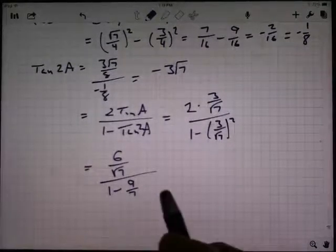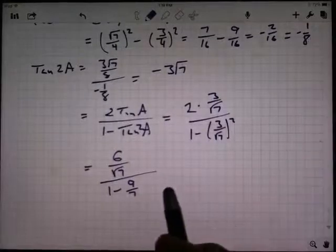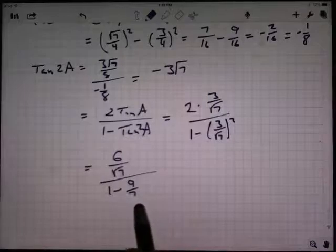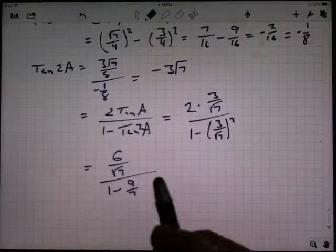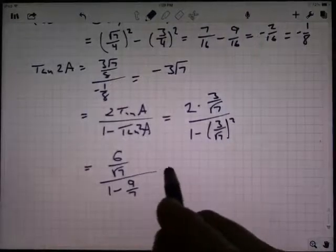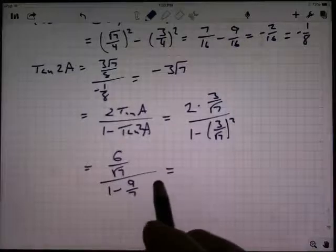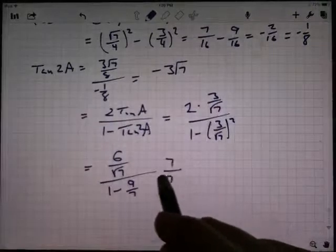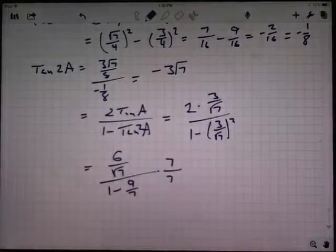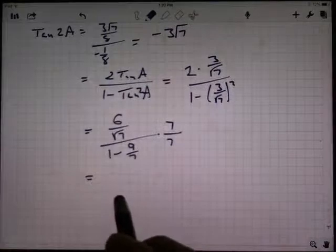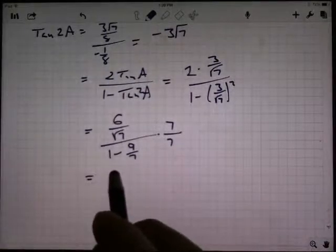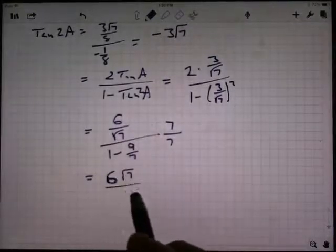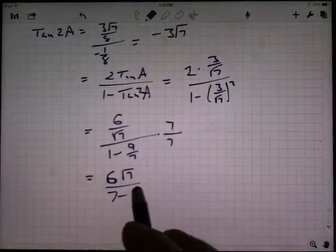Well, is this going to come out to be negative 1 over 8? Doesn't look like it initially here. I don't know. I'm going to keep going, I guess. So what am I going to do? I want to multiply top and bottom by 7. So I'm going to multiply by 7 over 7. That's just multiplying by 1. I don't change the value. I just change what it looks like. So the thing is here, the radical 7 and the 7 cancel out. I've got 6 times radical 7. On the bottom, I've got 7 minus 9.